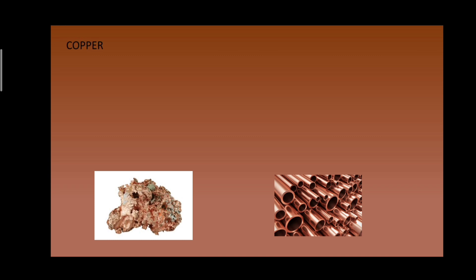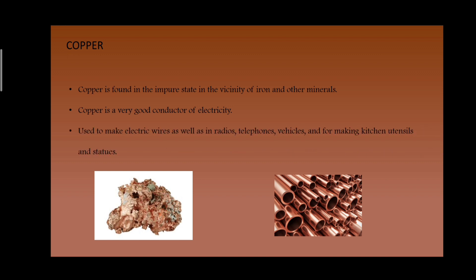Can you guess which metal this is? Here is the ore — it's copper. Copper is found in an impure state in the vicinity of iron and other minerals. Copper is a very good conductor of electricity, which is why it is used in cables and wires. It is also used in components of radios, telephones, vehicles, and for making kitchen utensils and statues.